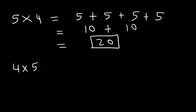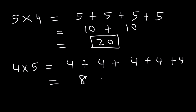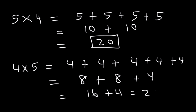You could also see it this way: 5 times 4 and 4 times 5 are the same. 4 times 5 means adding 4 five times. 4 plus 4 is 8, the next two 4s add up to 8, and there's one 4 remaining. 8 plus 8 is 16, and 16 plus 4 is 20. You get the same answer.